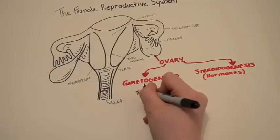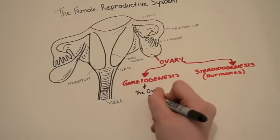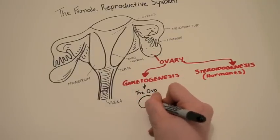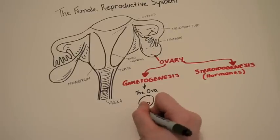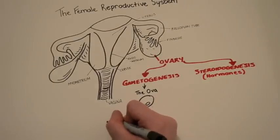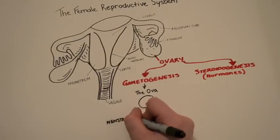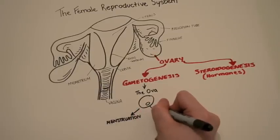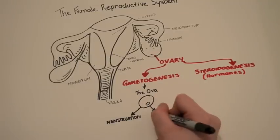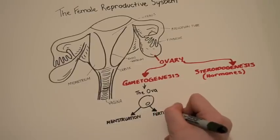The female gamete is known as the ova. It is released from follicle in the ovary. When the sperm fuses with the ova, it forms a zygote in the fallopian tube. If this does not occur, the ova implants in the endometrial wall and induces menstruation.